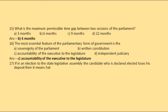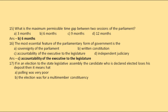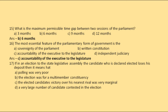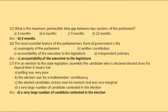If in an election to the state legislative assembly, the candidate who is declared elected loses their deposit, what does that mean? The options are: polling was very poor, the election was for a multi-member constituency, the elected candidate's victory over the nearest rival was very marginal, or a very large number of candidates contested. The correct answer is: a very large number of candidates contested in the election.